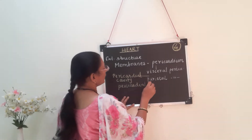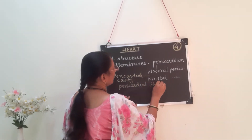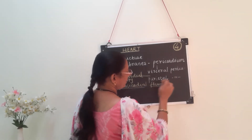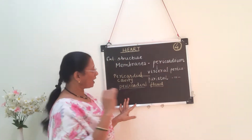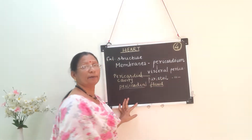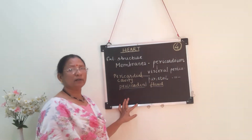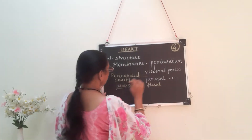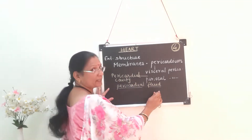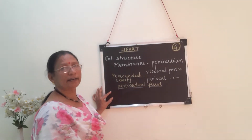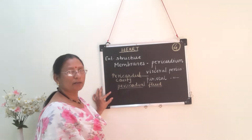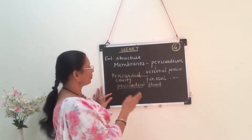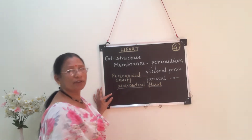What is the function of this pericardial fluid? This fluid is present between the visceral and parietal pericardium, so it acts as a shock absorber — it prevents shock waves from reaching the heart. The second function is it acts as a lubricant, providing free movement to the heart.